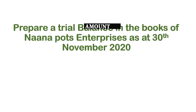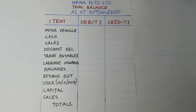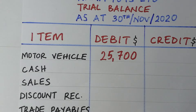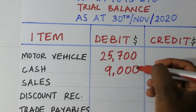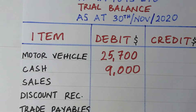We have motor vehicle — the balance extracted from the motor vehicle account is $25,700. Motor vehicle is a fixed asset, and all assets have debit balances. So we write $25,700 on the debit side of the trial balance. Then we have cash at $9,000. Cash is an asset and all asset accounts have debit balances, so $9,000 goes on the debit side.